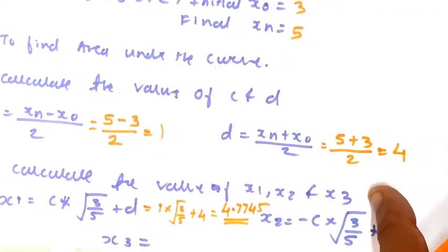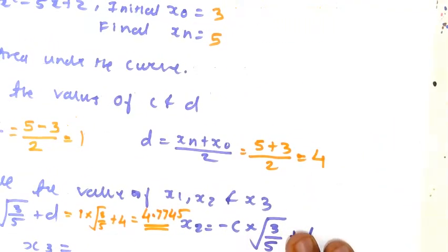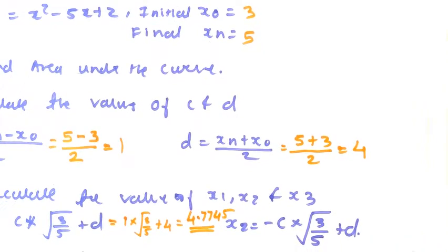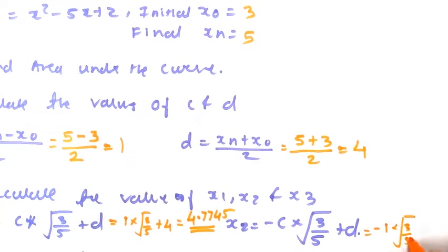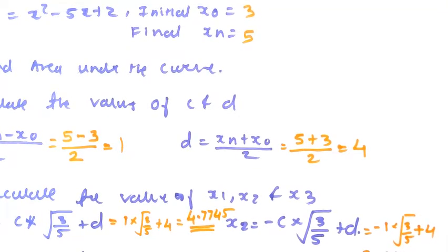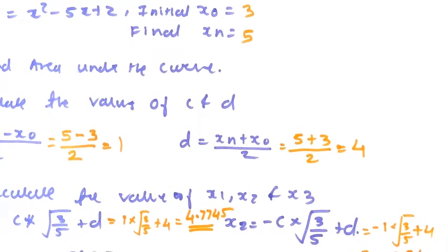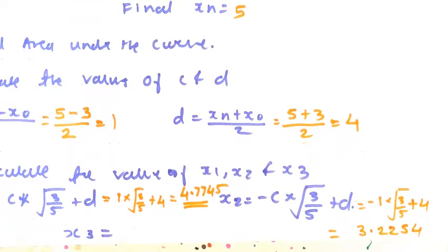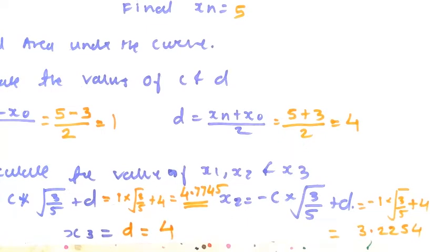For x2, the formula is x2 = −c × √(3/5) + d, which gives −1 × √(3/5) + 4, equal to 3.2254. For x3, x3 = d = 4. So we have all values: x1 = 4.7745, x2 = 3.2254, x3 = 4.